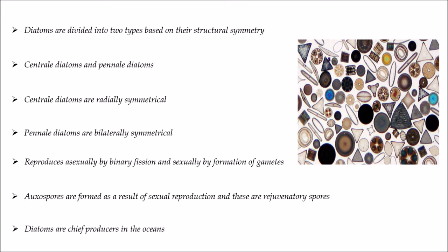Diatoms are the chief producers in the oceans. To summarize: diatoms are divided into centric (radially symmetrical) and pennate (bilaterally symmetrical) types; they reproduce asexually by binary fission and sexually by gamete formation; auxospores are the rejuvenatory spores formed from sexual reproduction; and diatoms are chief producers in the oceans.